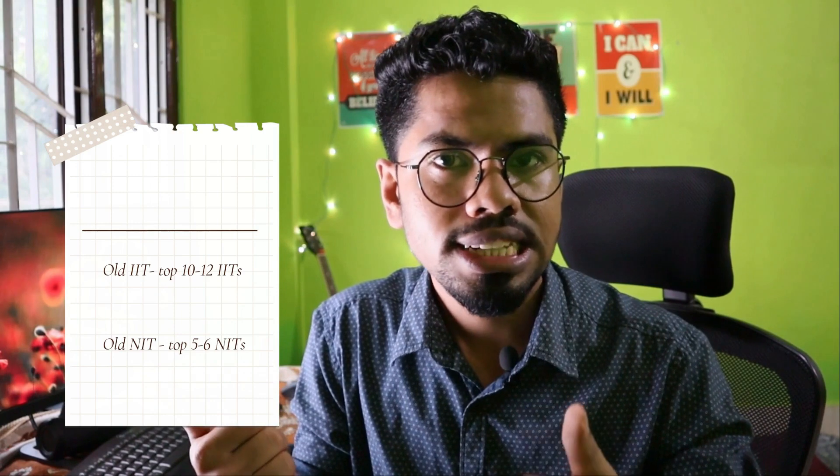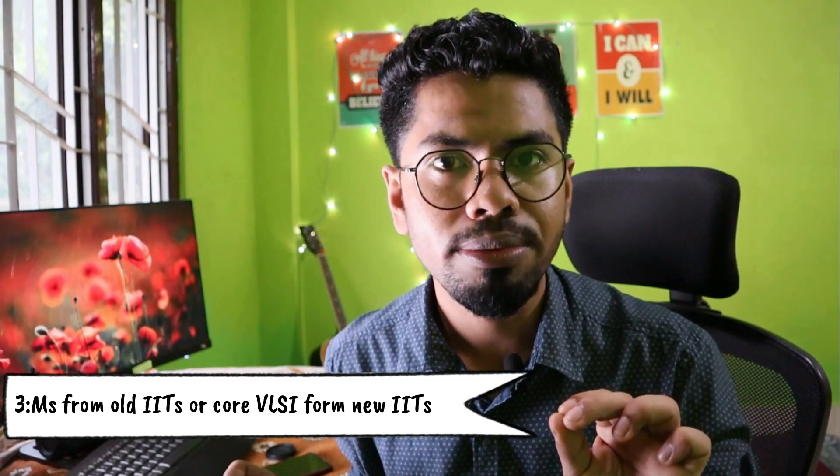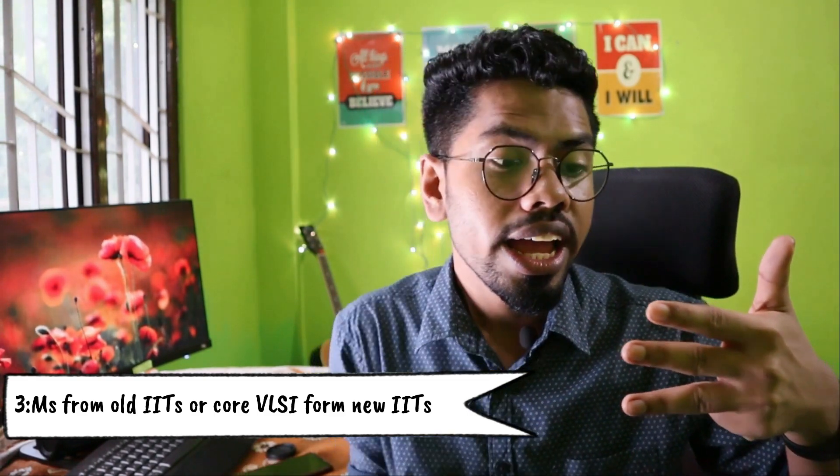Now the question is: how to fix your priority? You need to apply everywhere, but if you get two or three offers, which one should you choose? First, old IITs — top 10 to 12 IITs — for any VLSI or aligned branch across every department and school. Second, core VLSI branches in old NITs — top five to six NITs — and don't go for aligned branches in old NITs. Third preference: MS from old IITs or core VLSI branches from new IITs — and in new IITs, only go for core VLSI, not aligned branches.